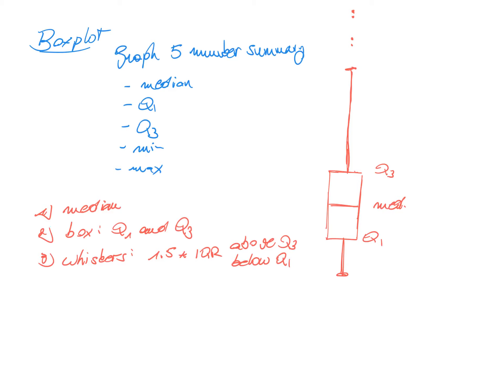Looking at the example on the right: when we go below q1, 1.5 times IQR would end up at a certain point, however our last regular observation below q1 is at a closer point and so we stop at that actual data point. On the other side, above q3, we have 1.5 times the IQR, and we have data that go outside of it, so you draw the whisker up to the last regular point — the last point which is at most 1.5 times the IQR above q3. All of the points you draw are actual data points, and then you add outliers separately: each outlier gets its own dot.